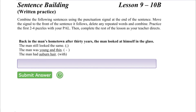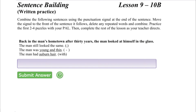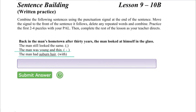Let's try one more. Begin by reading the sentences in the sentence building puzzle separately. The base sentence: Back in the man's hometown after 30 years, the man looked at himself in the glass. And the signal sentences: The man still looked the same. The man was young and thin. The man had auburn hair. The signals for combining these sentences are in parentheses. Begin by moving the signals in parentheses in front of the sentence they follow.